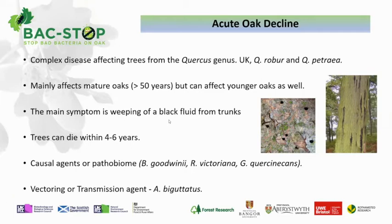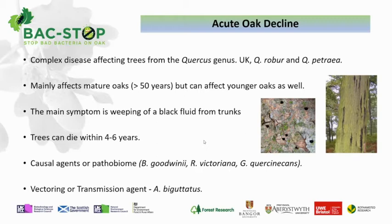The disease mainly affects older oaks — 50 years plus — but it can also affect younger susceptible oaks as well. The main symptom is this weeping black fluid from the trunks, which is a characteristic symptom of acute oak decline. Along with this you see the d-shaped exit holes of the Agrilus beetle. Trees, once they have acute oak decline, deteriorate and die quite quickly — usually within four to six years. But some level of recovery has been seen, so there's always hope in trying to find a way to treat AOD.